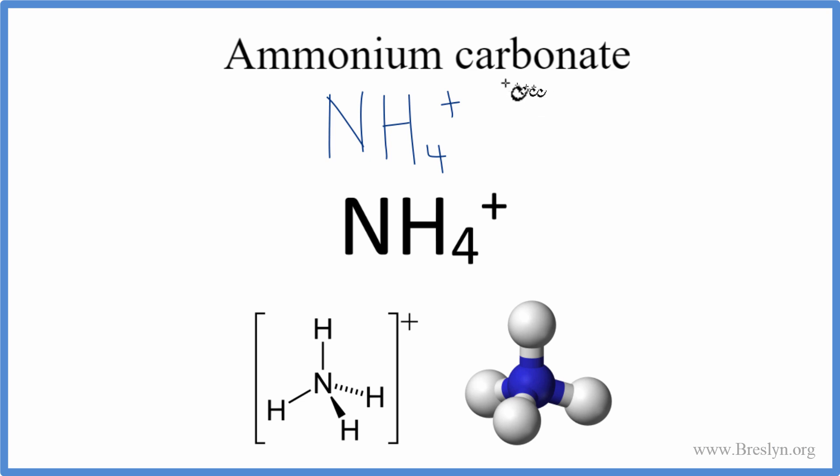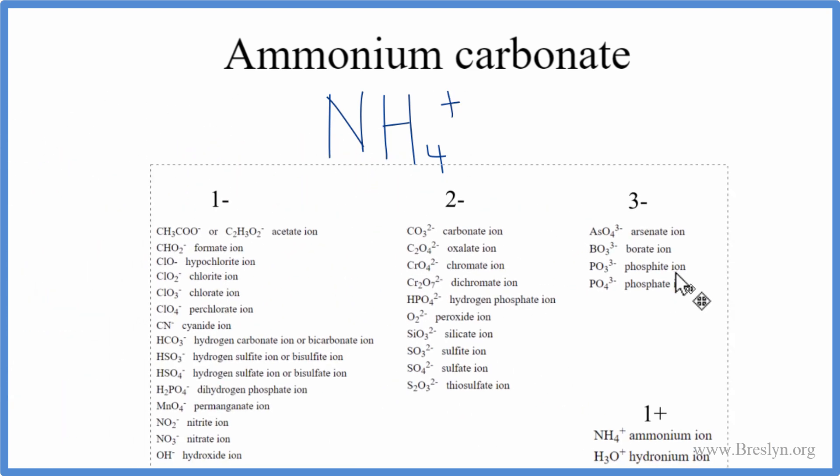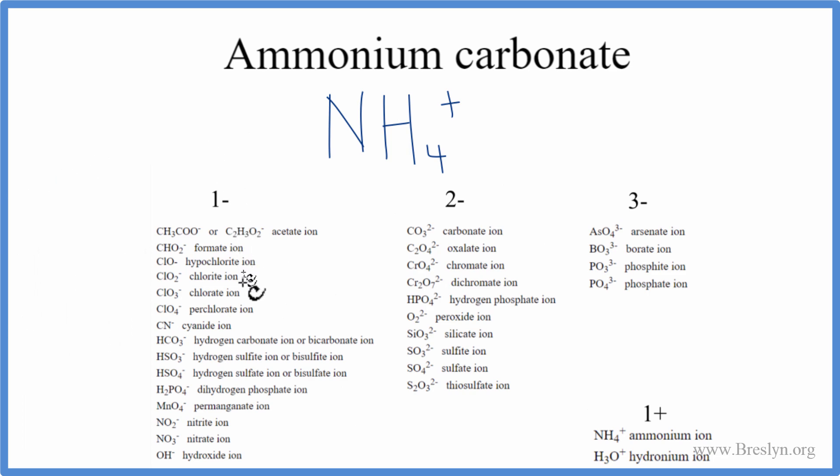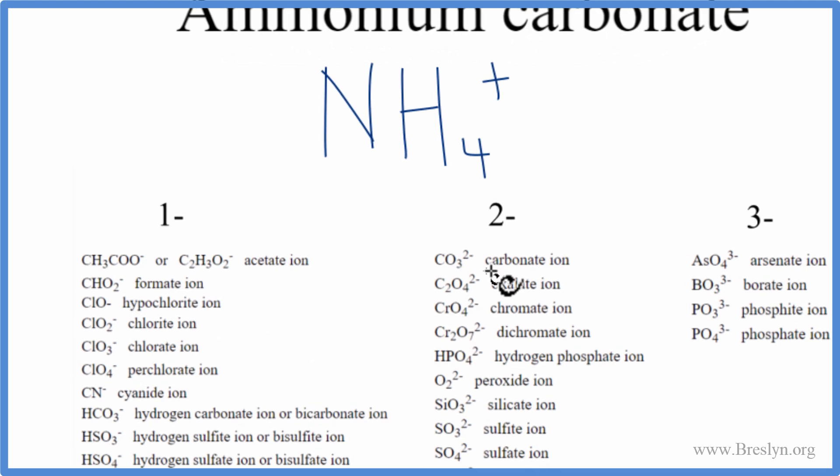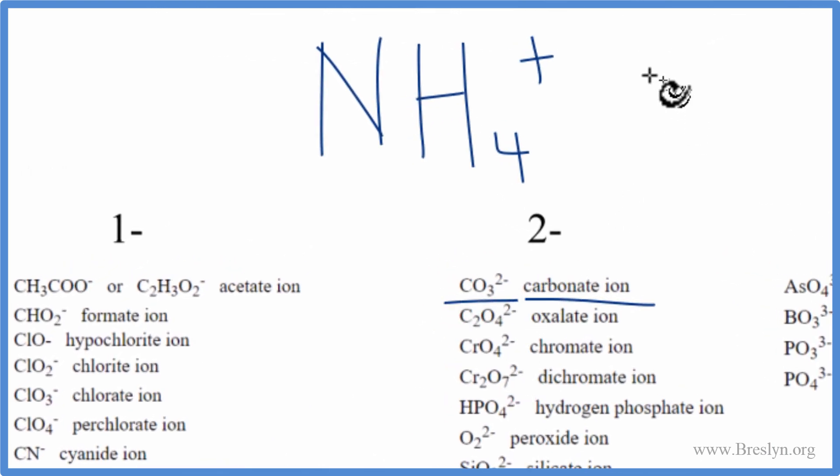Next we need to find what the carbonate ion is. If you see ATE, it's not going to be on the periodic table, and we'll need to go back to our chart here and look it up. So the carbonate ion is right here, carbonate ion, CO3, 2 minus.